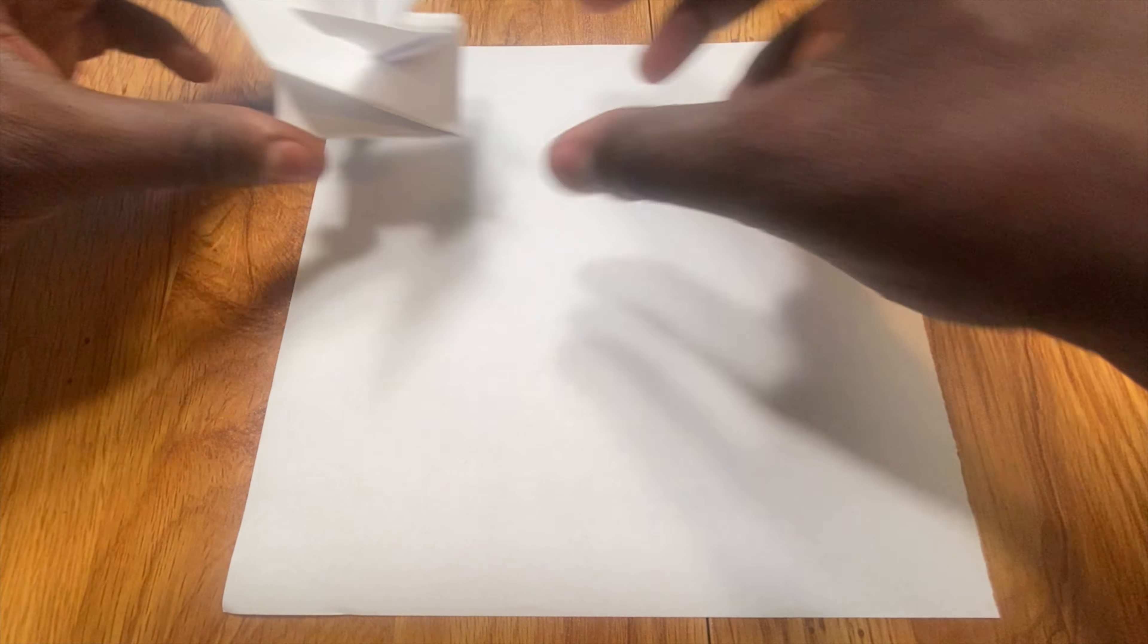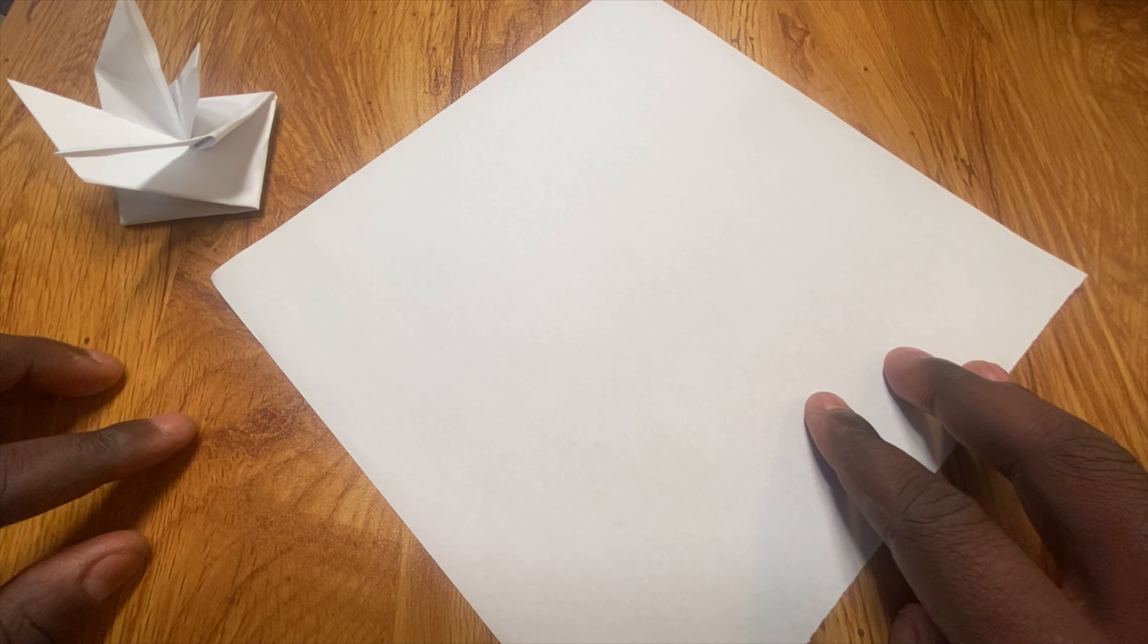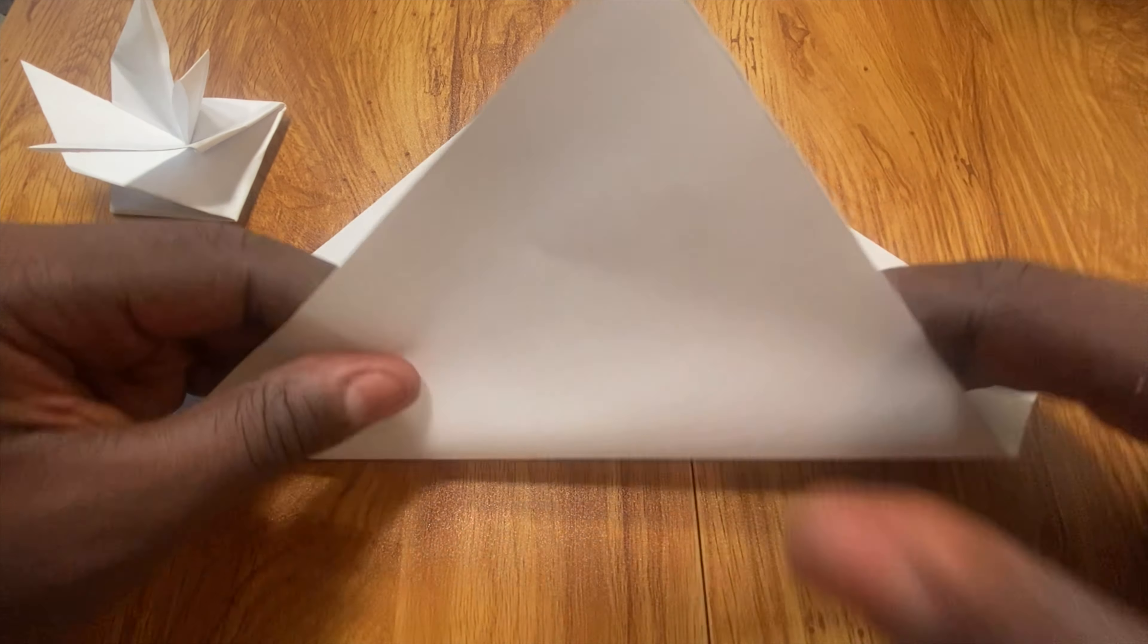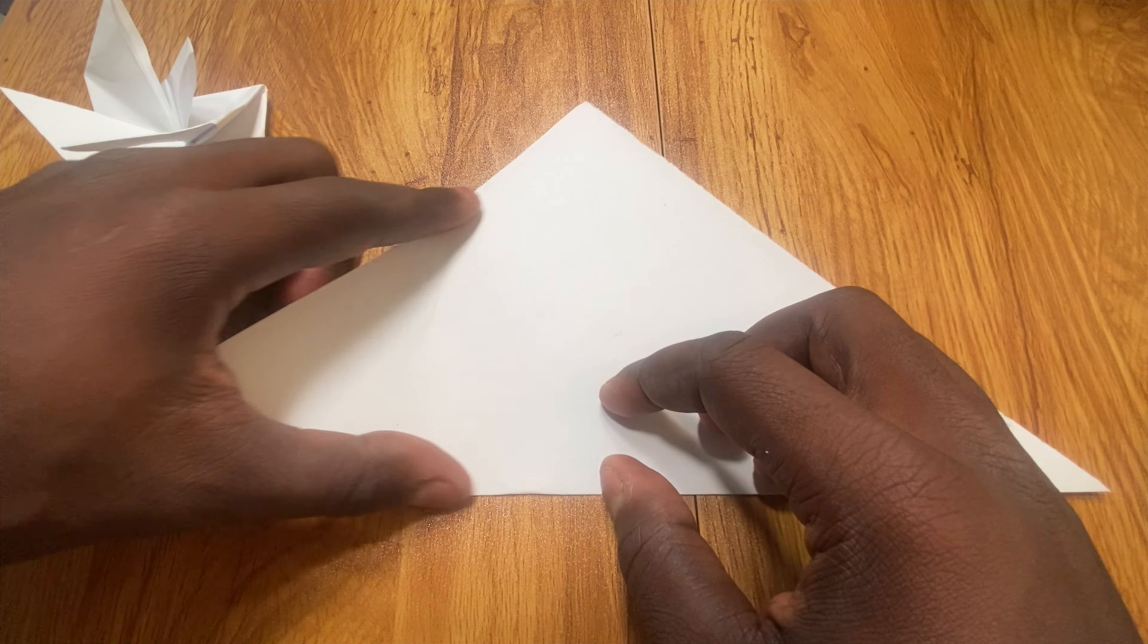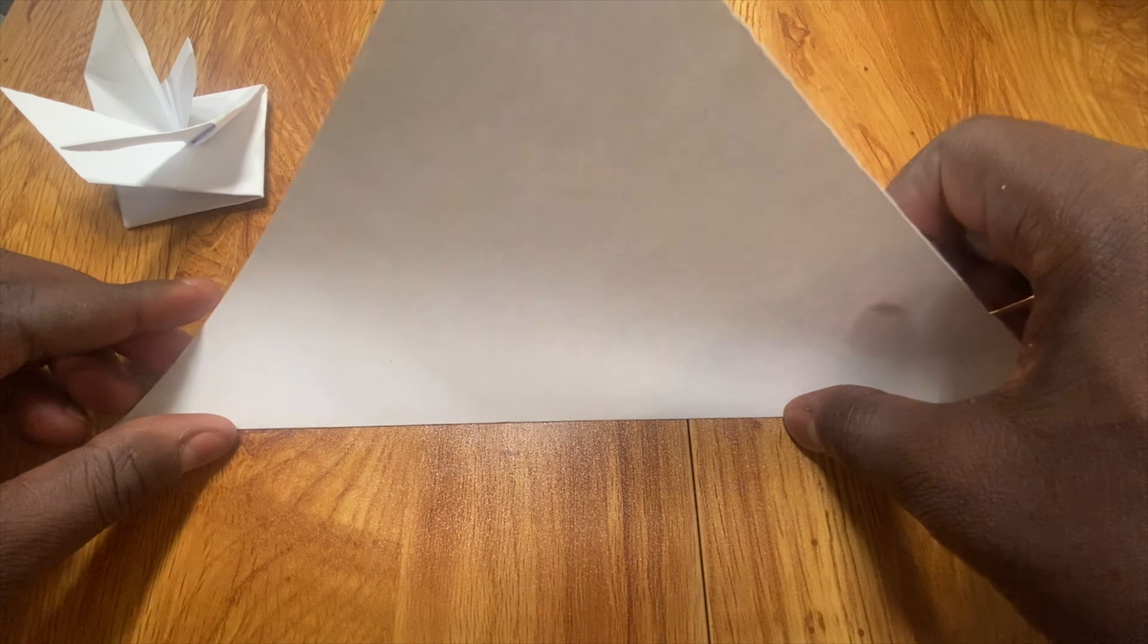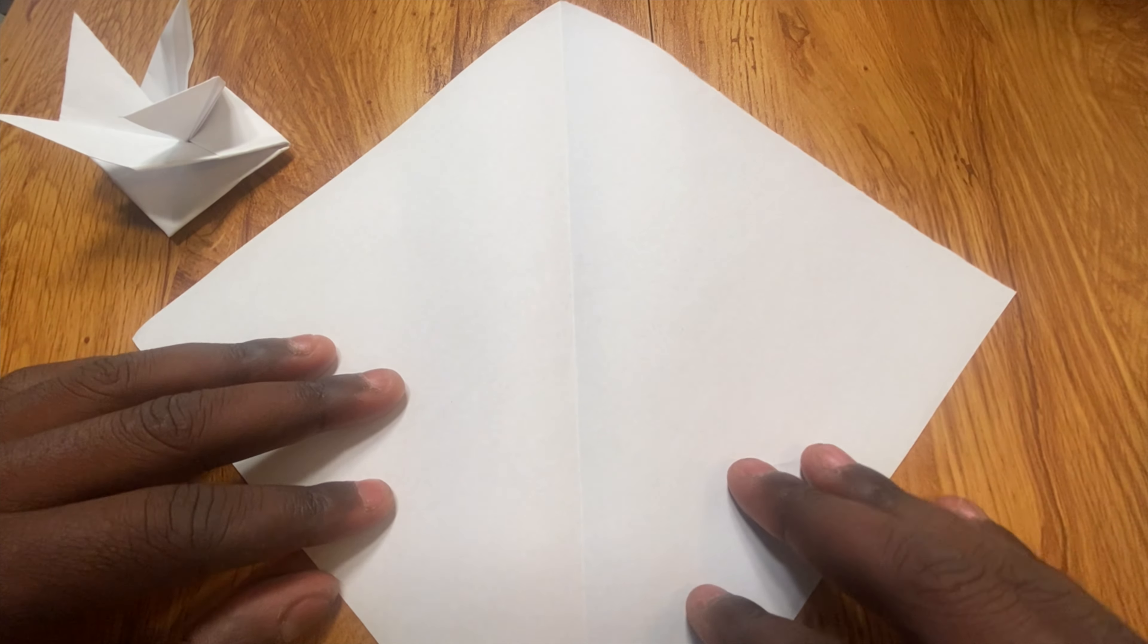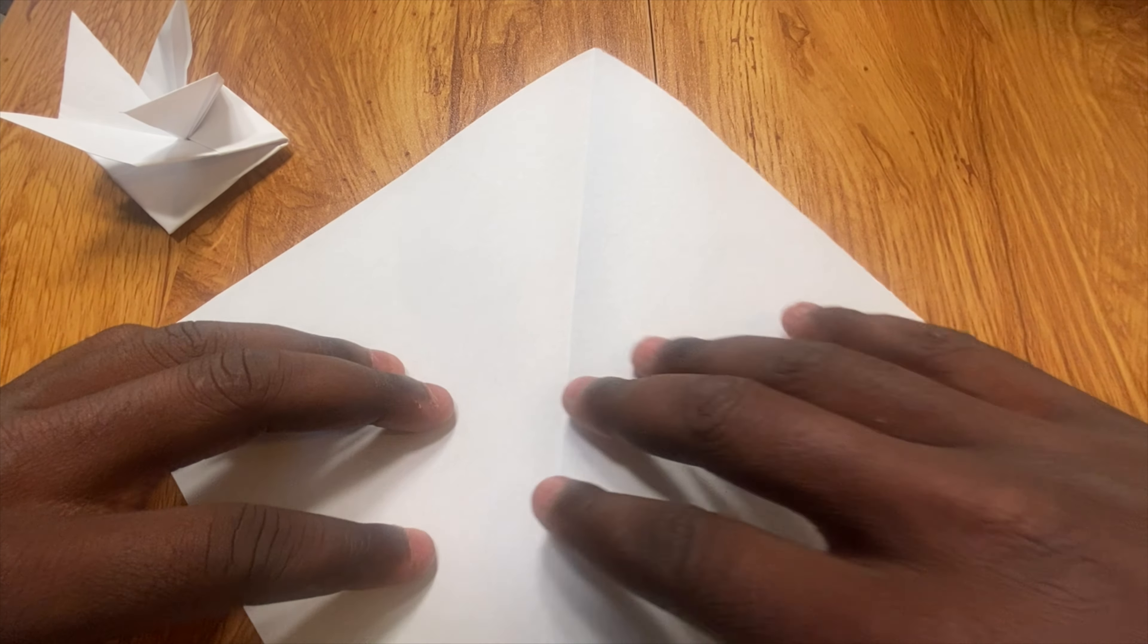All right let's begin. So our first step is we'll rotate the square so it looks like a diamond and we'll fold from corner to corner like so. Then we'll unfold, rotate, and repeat folding corner to corner.